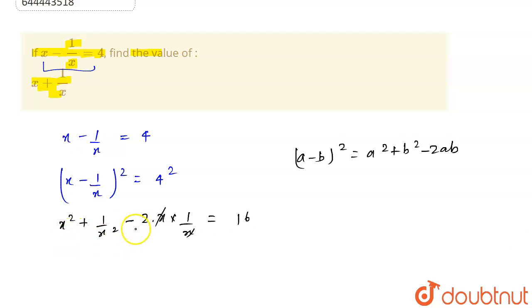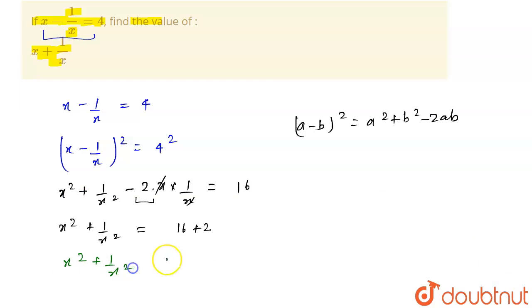This 2 will come to the right side. So it will become x squared plus 1 upon x squared is equal to 16 plus 2. We can now write this as x squared plus 1 upon x squared is equal to 18.